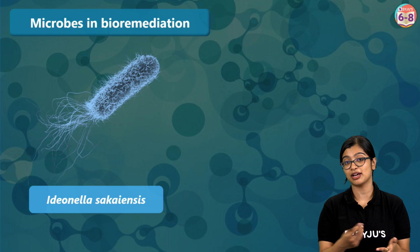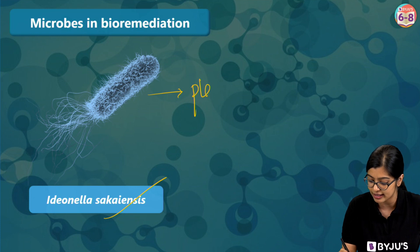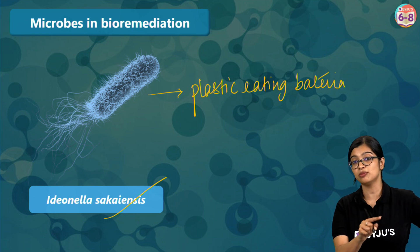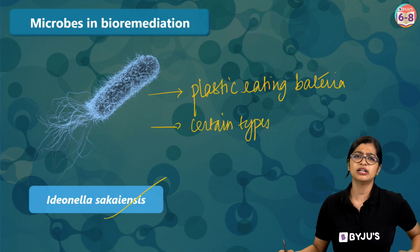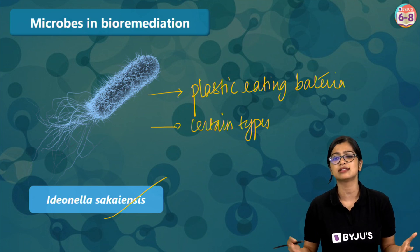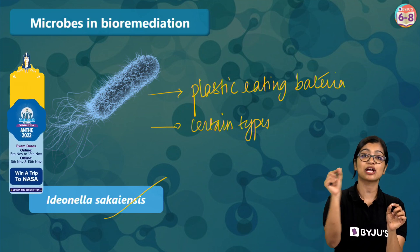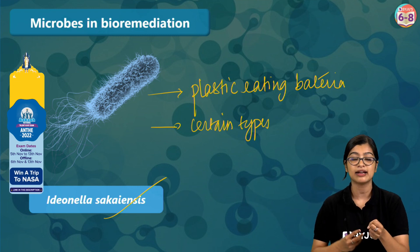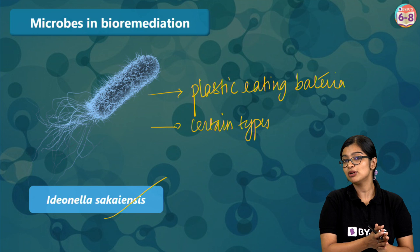Similarly, another bacterium they have stumbled upon is Ideonella sakaiensis, very popularly known as the plastic-eating bacteria. One limitation with this particular species is that it will eat only certain types of plastic. But scientists being curious as ever, maybe as you grow up and become scientists, you can find a way to make Ideonella eat more kinds of plastic — thereby tackling one of the largest problems, since so much plastic is polluting our soil and water.